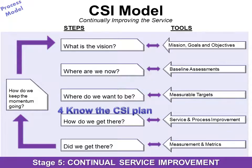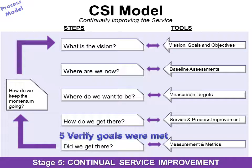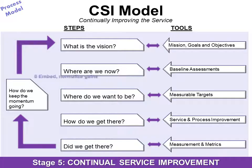How do we get there? You have to know the CSI plan — that's your service and process improvement. Then you must measure: did we get there? You want to verify that goals were met using measurements and metrics. And finally, how do we keep the momentum going? We want to embed and normalize gains by putting processes down in writing to create process models.